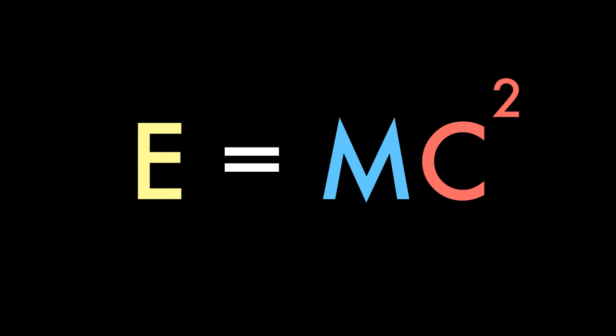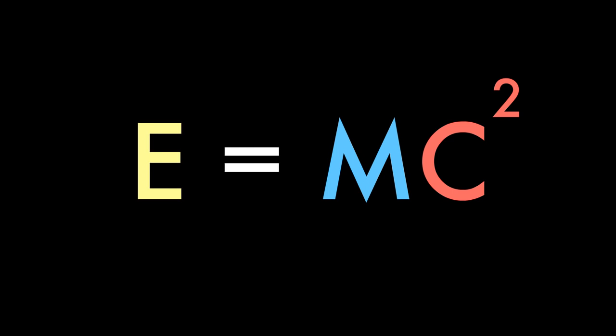We all know the equation E equals mc squared, but what does it mean? Basically, it says that energy is equivalent to mass, and mass is equivalent to energy.